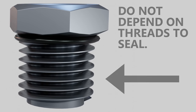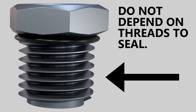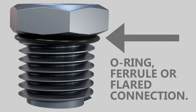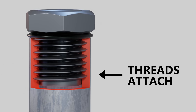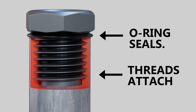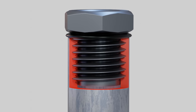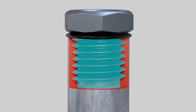Straight threads, unlike the previous, do not depend on the actual threads themselves to create a leak-free joint. Instead, they use an o-ring or rubber seal, a compression ferrule, or a flared connection. The threads are basically what attaches both pieces together, and the connection is what seals it and makes it liquid or airtight. If we look at the o-ring or rubber seal, the liquid being transported in the pipe would go into the threads but not go past the seal. These threads do not require any sealant such as Teflon tape or pipe dope, like tapered threads do, which is a common mistake that a lot of beginners make.